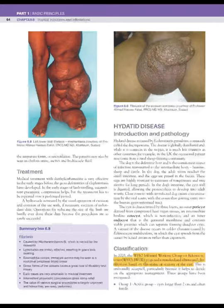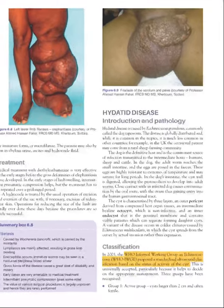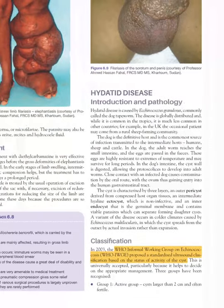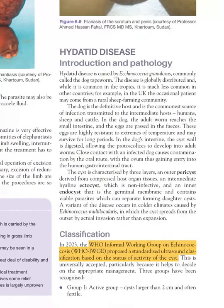Next is hydatid disease, caused by Echinococcus granulosus, called the dog tapeworm, and mostly common in sheep farmers. The dog is the definitive host, humans are accidental hosts, and sheep are intermediate hosts. The life cycle begins when we ingest eggs from dog feces or through contact with dogs. The cyst forms in our body but cannot mature into adult form; however, if a dog ingests sheep meat, the cyst can grow into adult form inside the dog.